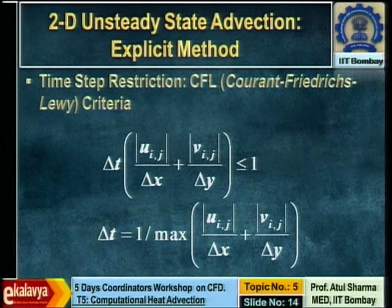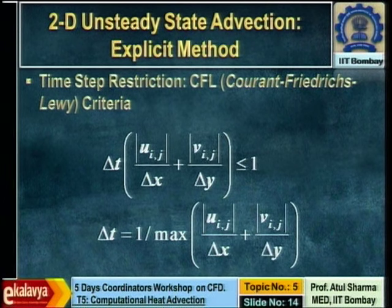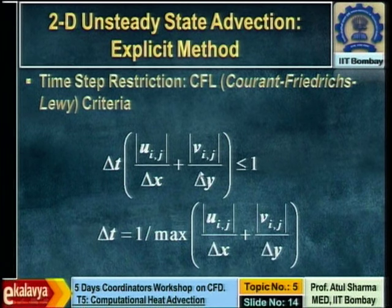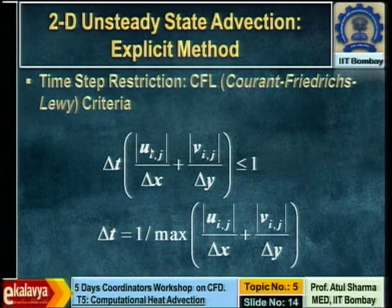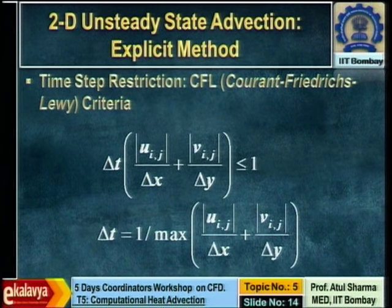The physical meaning of the stability criterion is that u × delta_t represents the distance travelled by the fluid particle, and dividing by delta_x means this distance should be less than one cell width. In two dimensions, the distance travelled is in an inclined direction, so the sum of distance travelled in x and y directions divided by their respective cell sizes should be less than one.